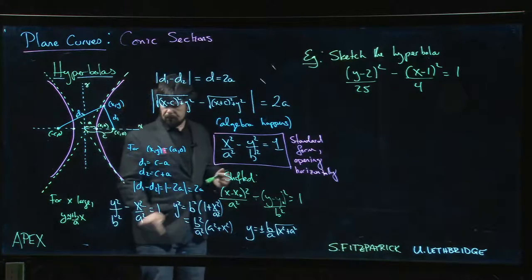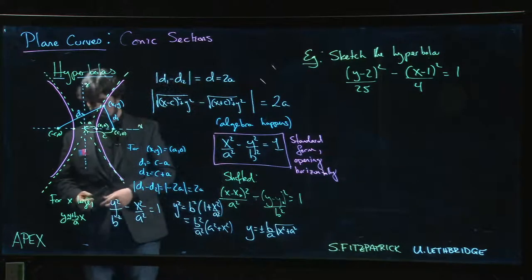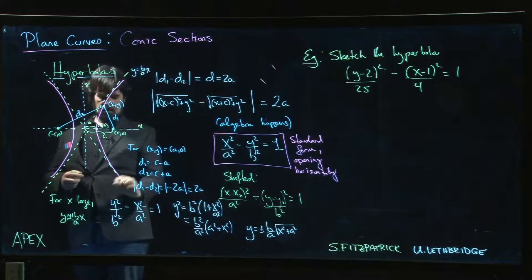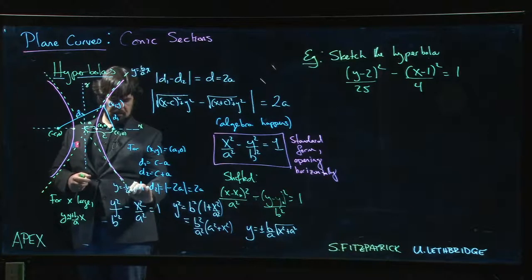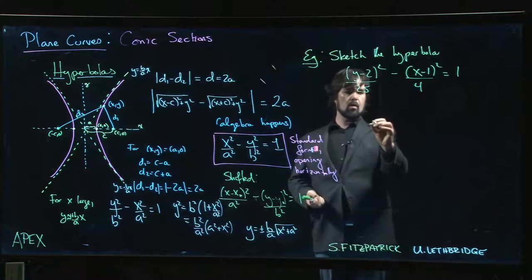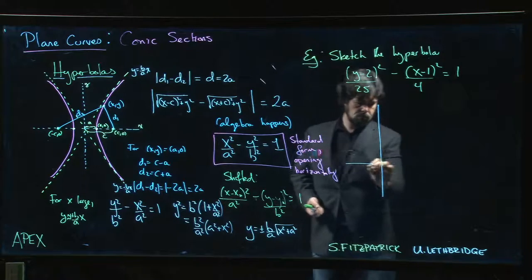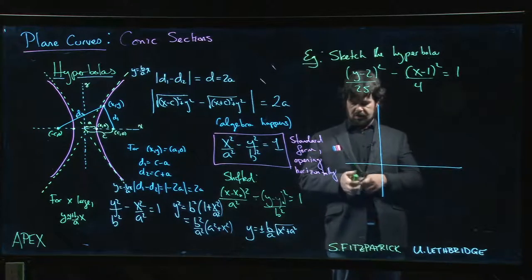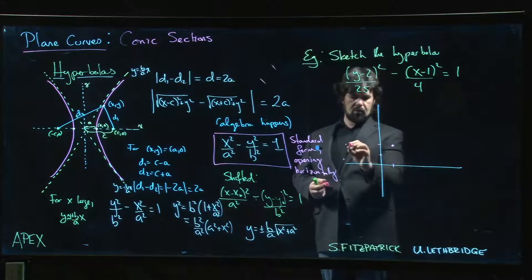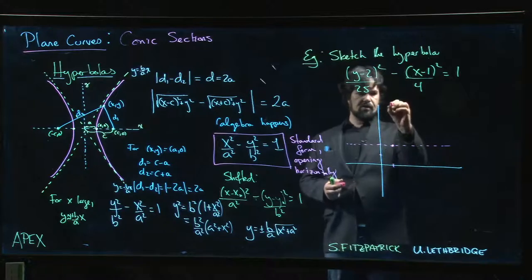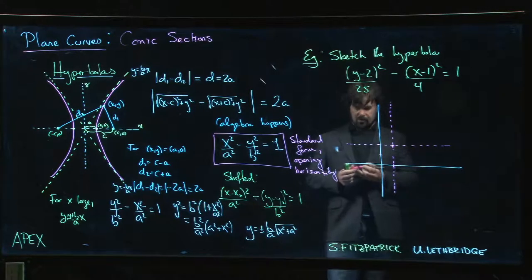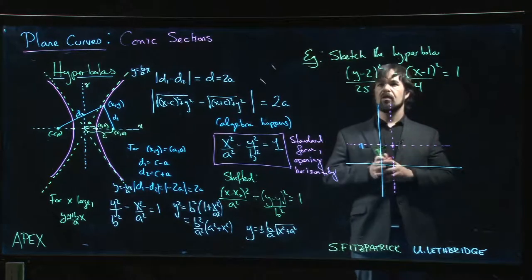For large x, y ≈ ±(b/a)·x. Those are straight lines — those are the asymptotes. The line y = (b/a)x and the line y = −(b/a)x. That's going to be a key observation when we want to sketch the hyperbola. So let's draw our coordinate system and mark the center at (1, 2) with our two axes of symmetry.